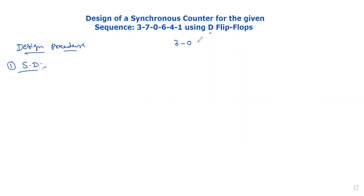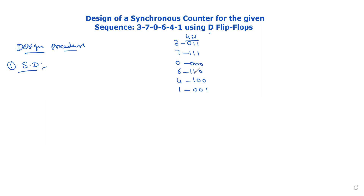Binary representations: 3 in binary is 0-1-1. 7 in binary is 1-1-1. 0 in binary is 0-0-0. 6 is 1-1-0. 4 is 1-0-0. 1 is 0-0-1. These are based on the binary weights where 4 is in the most significant bit position. The next step is to represent the corresponding decimal number. You can represent each decimal number in the state diagram in a circle format.